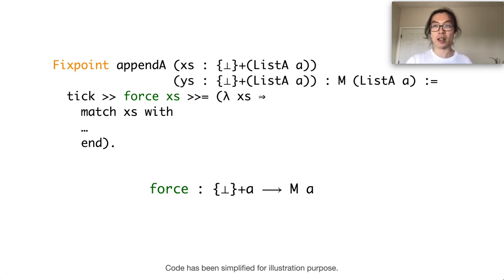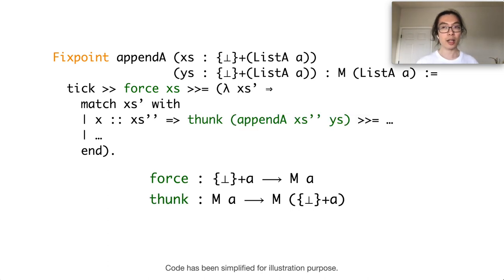In the case that xs is indeed undefined, the force operation will simply fail the branch. In the case that xs indeed contains some value inside it, we continue on pattern matching on the value inside it.